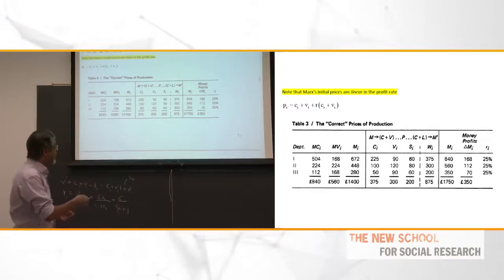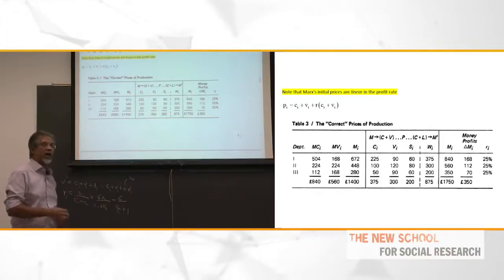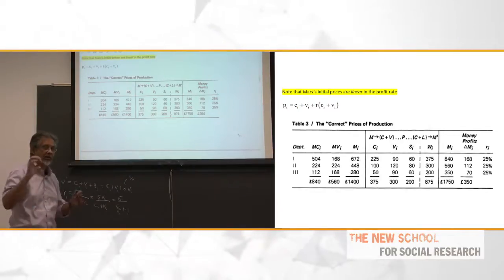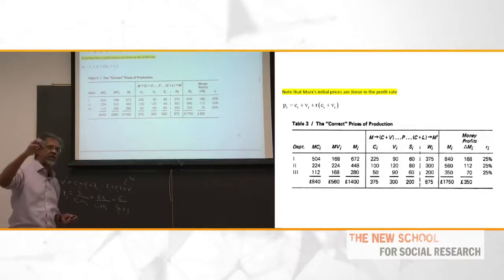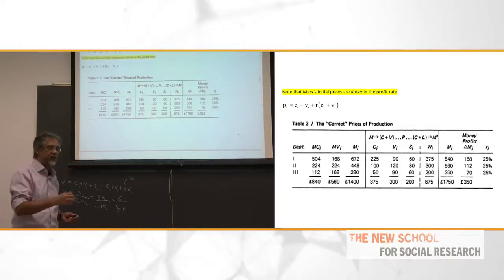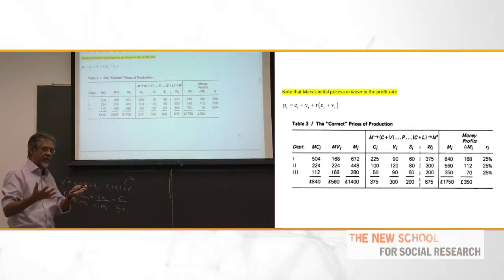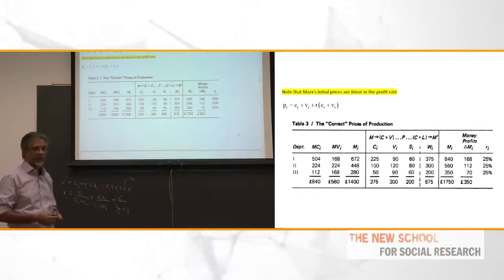What I show in the book and in earlier articles is that you can explain this difference. The mystery of the appearance or disappearance of profits is dissolved. What we're concerned with is the properties of the price itself — what does it look like when you allow for all these feedback effects? How is the price going to look as a function of the rate of profit? In Marx's case, it's linear.